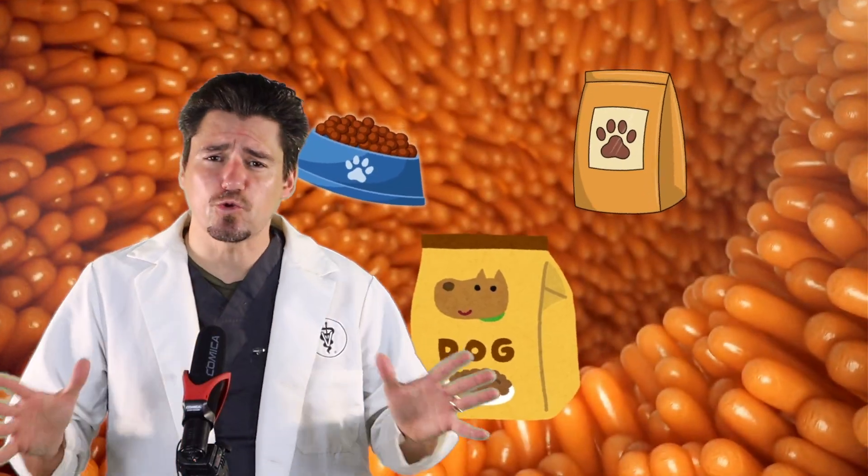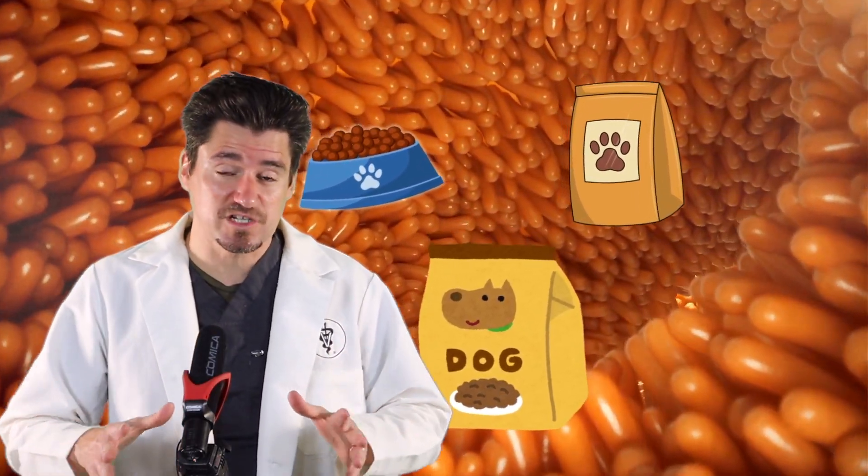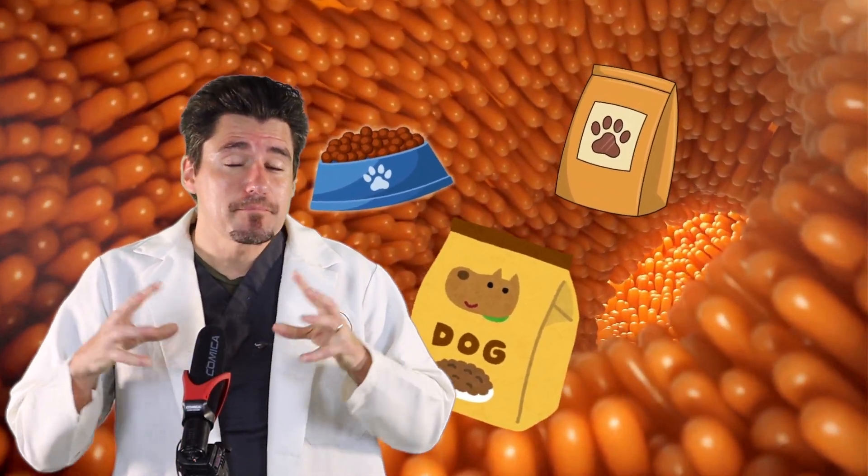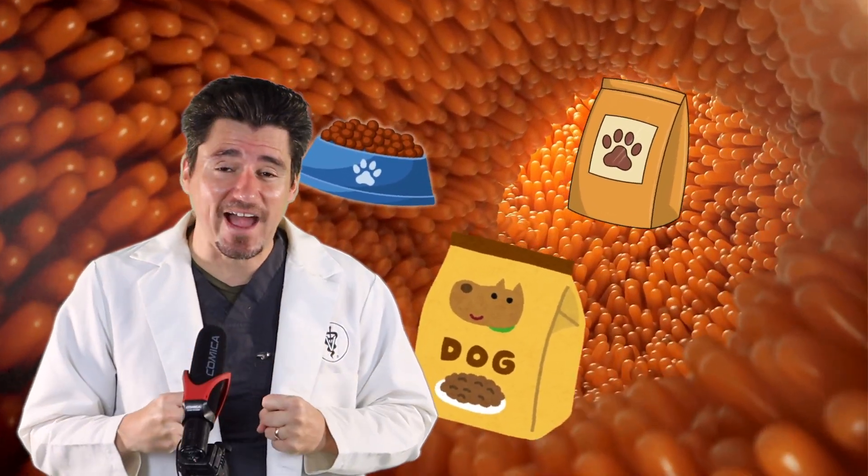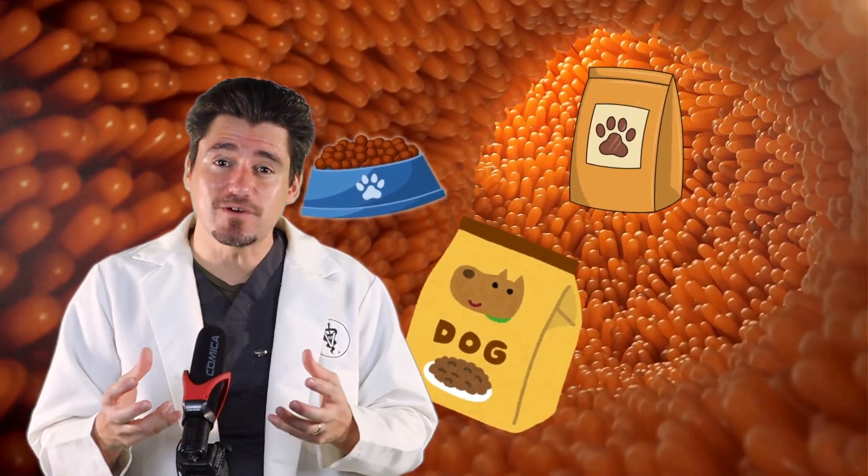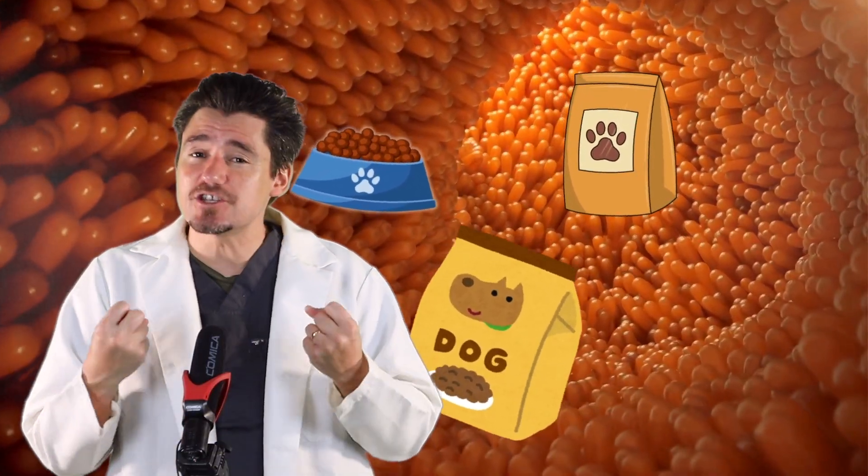The jejunum does the majority of the absorption, which is pulling the nutrients, pulling the energy, all the protein and carbohydrates and fat out of the food, out of the digested food into the dog's body.